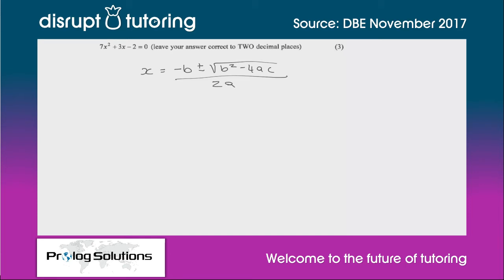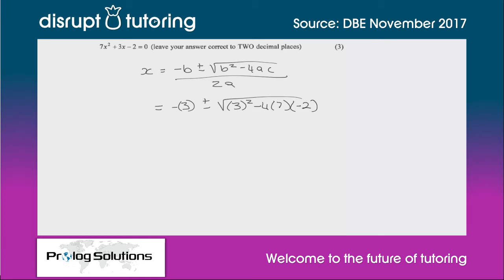In each of the a, b, and c positions we're going to substitute our values: a = 7, b = 3, and c = -2. Substituting in, we get: (-3 ± √(3² - 4 × 7 × (-2))) / (2 × 7).